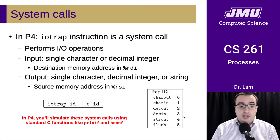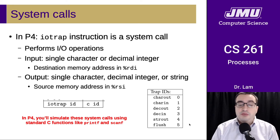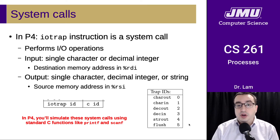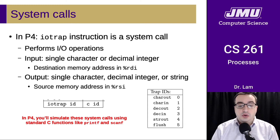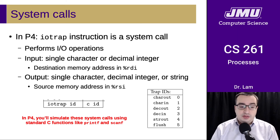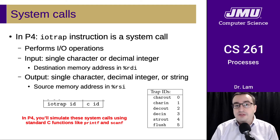For output, the source memory address is RSI. The three output TRAP IDs are char out, decimal out, and string out. There's also a flush — output is buffered until you call IOTRAP with TRAP ID 5, in which case it is flushed to standard out. In P4, you'll simulate these system calls using standard C functions like printf and scanf.